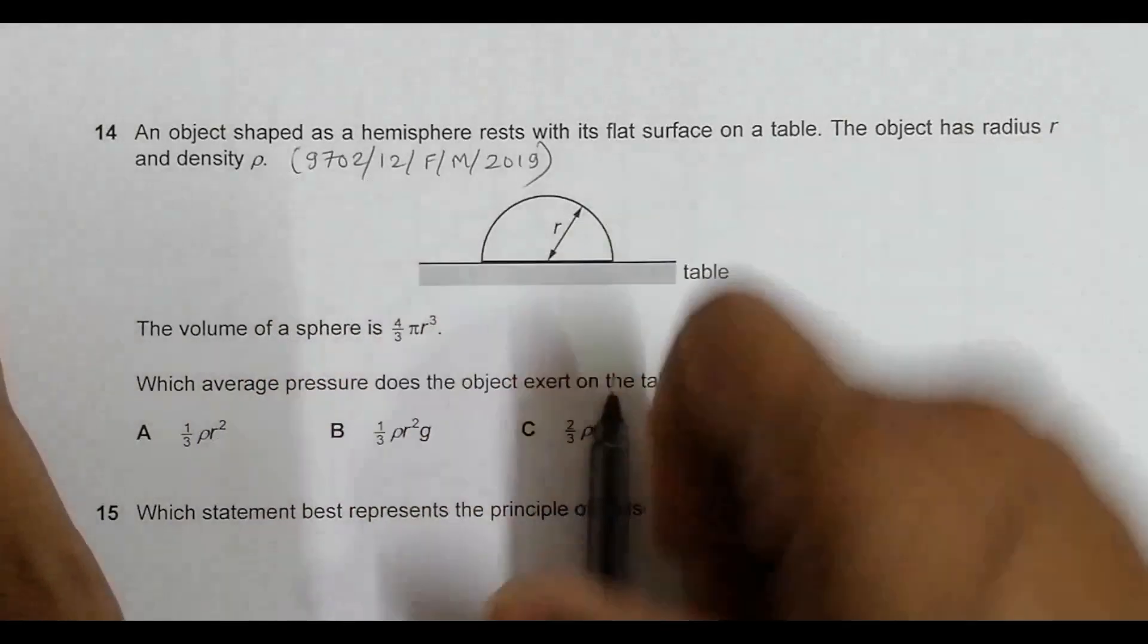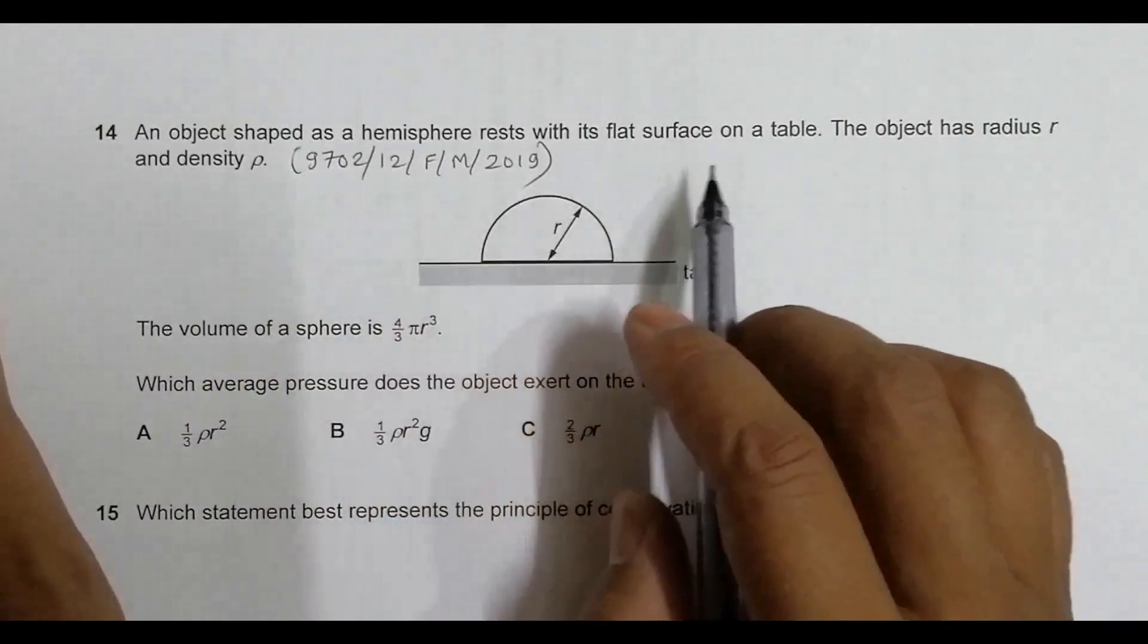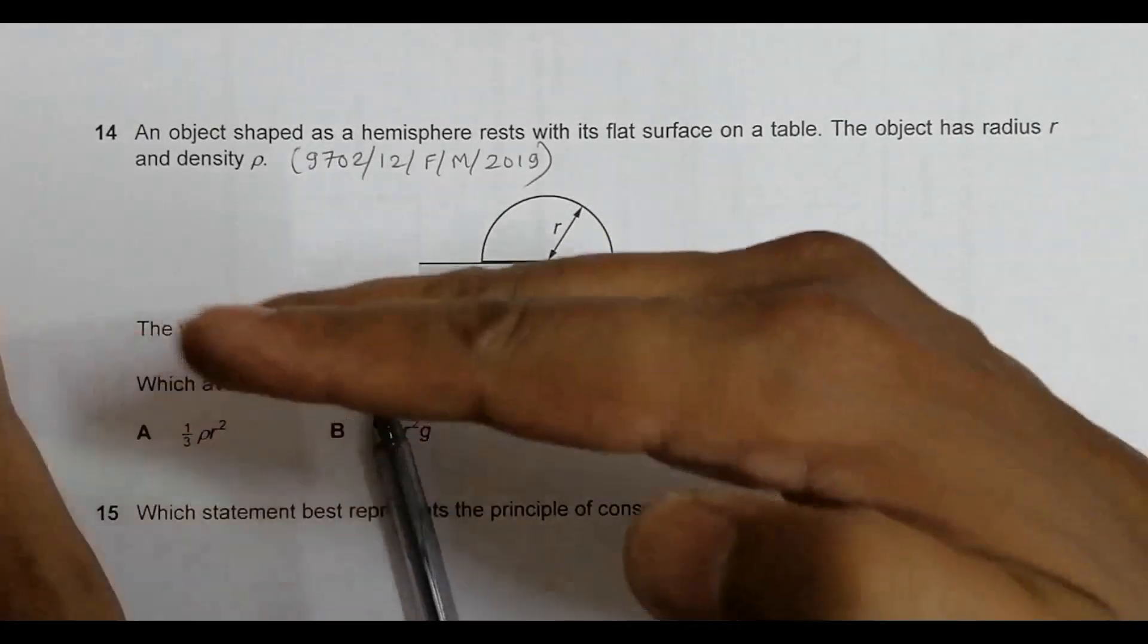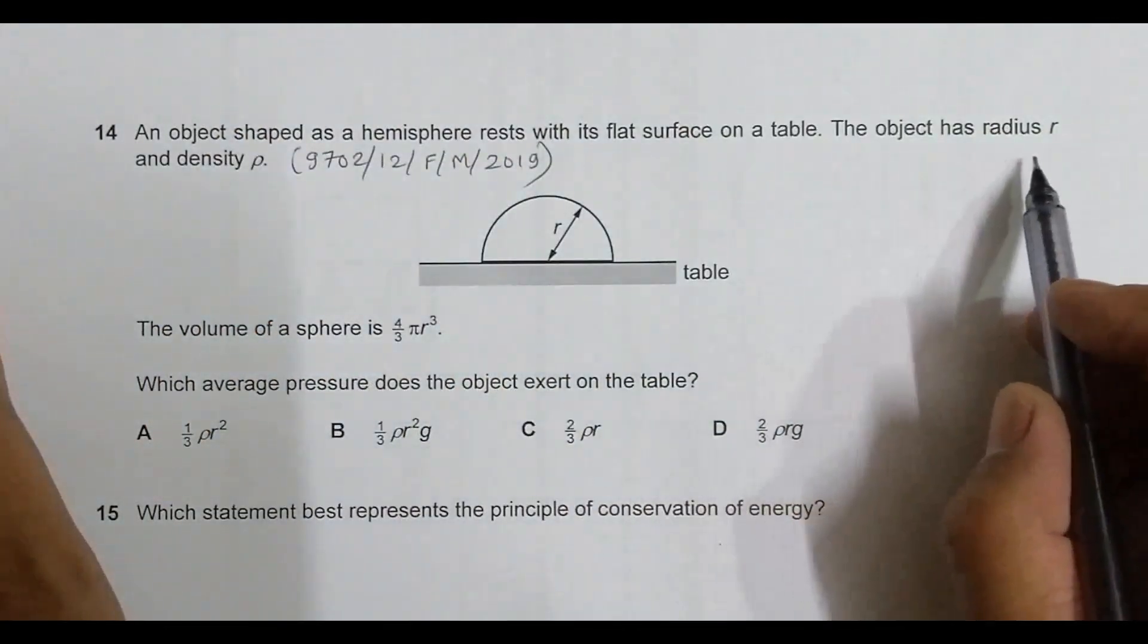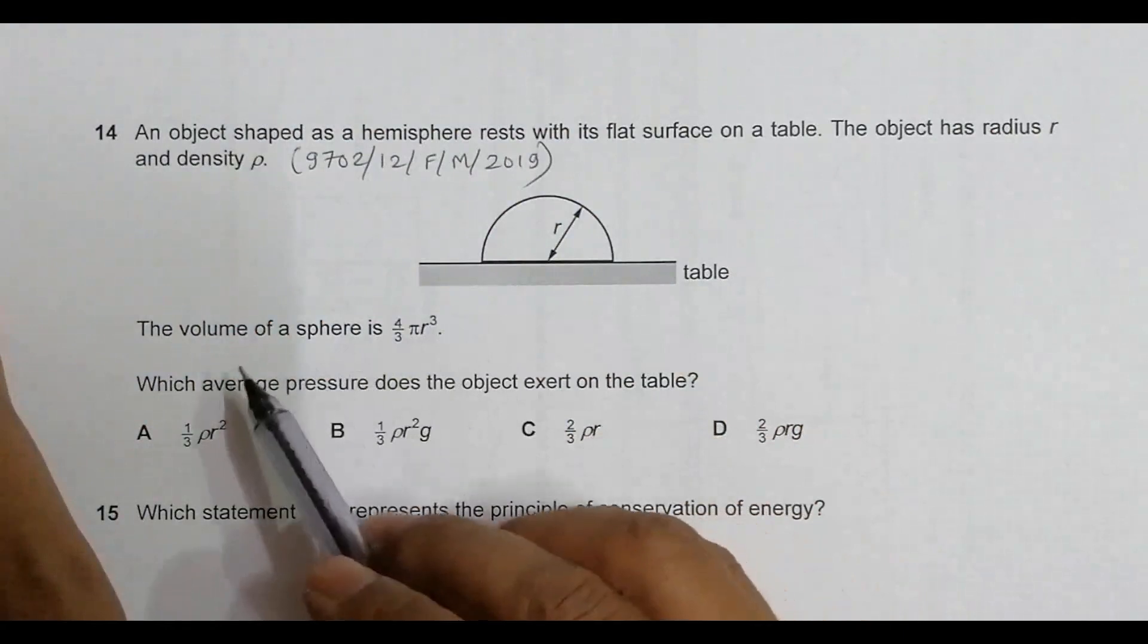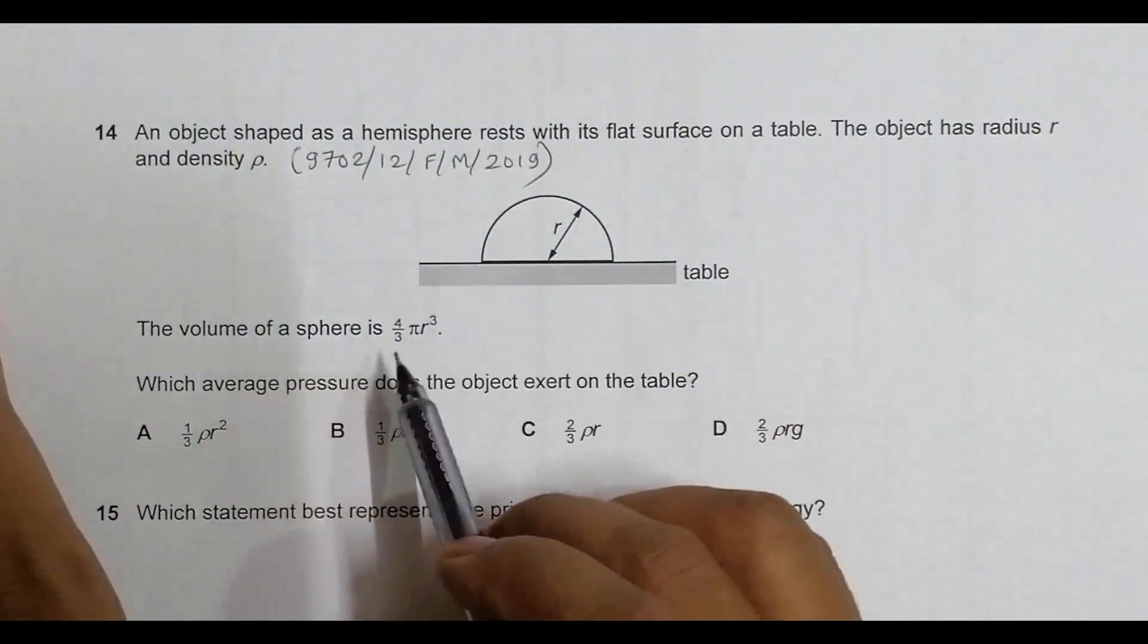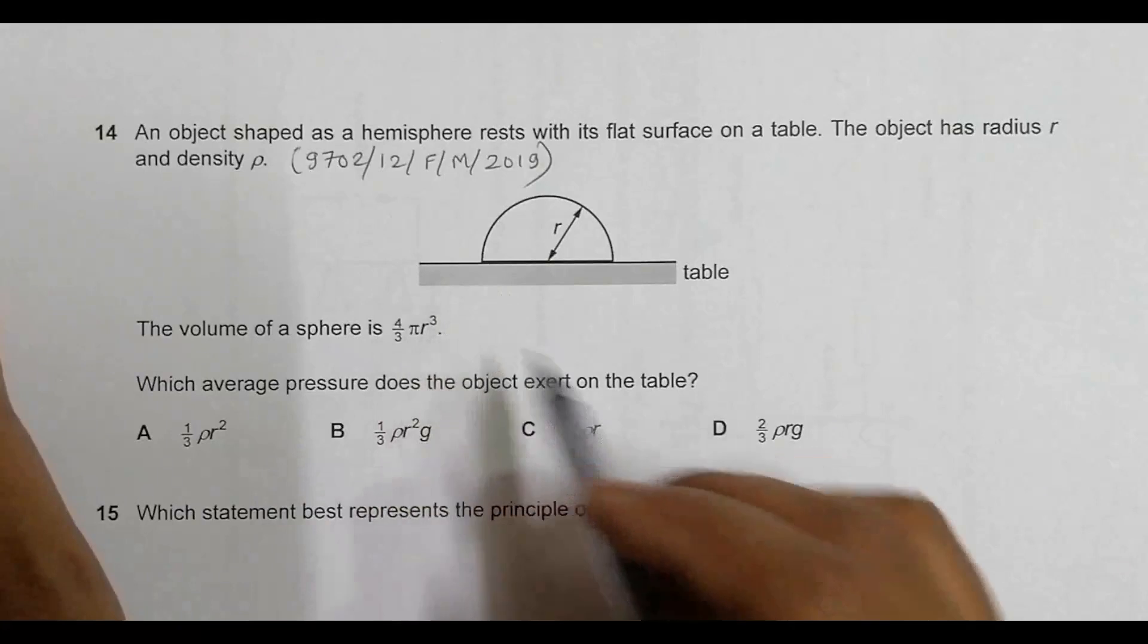The question says that an object shaped as a hemisphere - hemisphere means half of a sphere - rests with its flat surface on a table. The object has radius r and density ρ. The volume of a sphere is 4/3πr³.